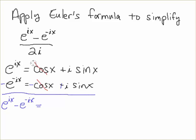On the right-hand side, the cosines cancel out and you get 2i sine x. That's starting to look like what we have here, so if I divide both sides by 2i, I then have e to the ix minus e to the minus ix over 2i equals sine x.